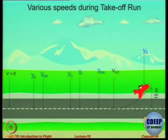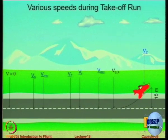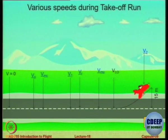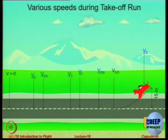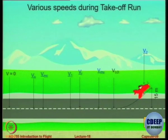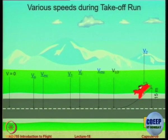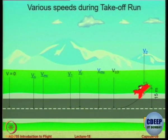So V2 is the takeoff safety speed — the speed at which, with one engine inoperative, you are still able to maintain a climb rate sufficient to clear the obstacle height at the end of the runway. When there is only one engine working you have less thrust available, so the climb rate will be lower. V2 is the speed at which, with landing gear retracted, you can maintain the required climb gradient. These are the key speeds to remember during the takeoff run.